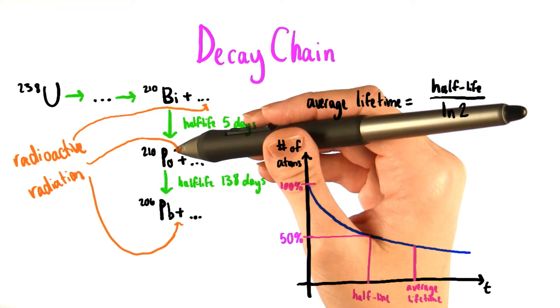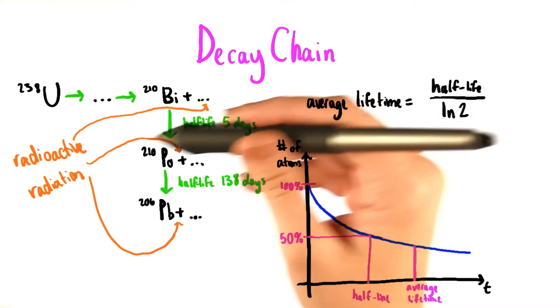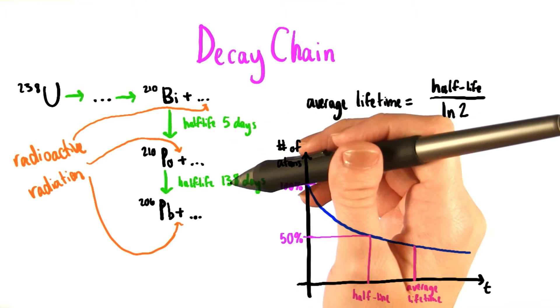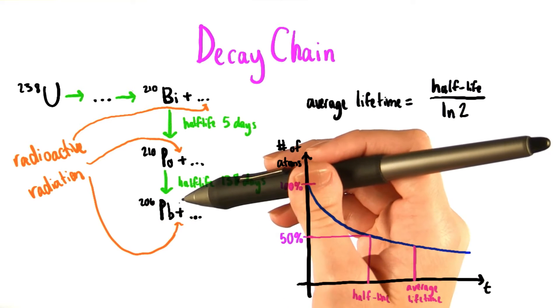Bismuth-210 has a half-life of five days, and it eventually decays to polonium-210, plus again, some radiation. And this has a half-life of 138 days. After some time, it decays to lead-206.